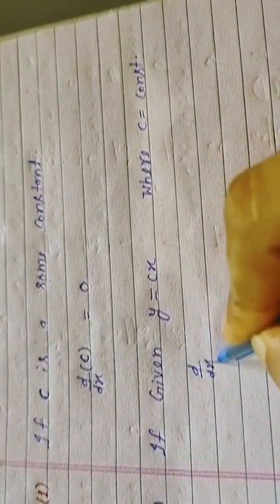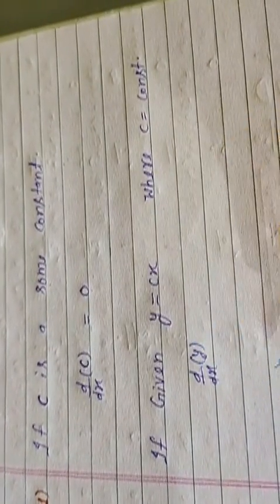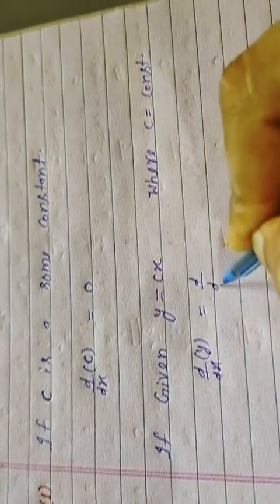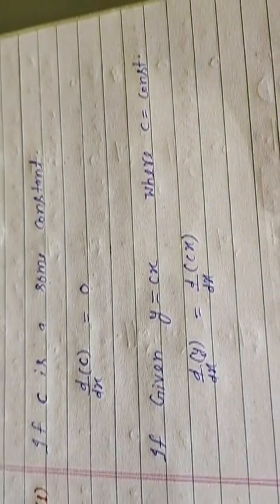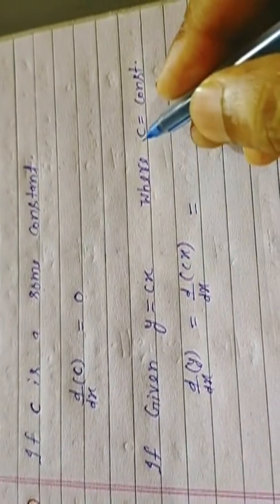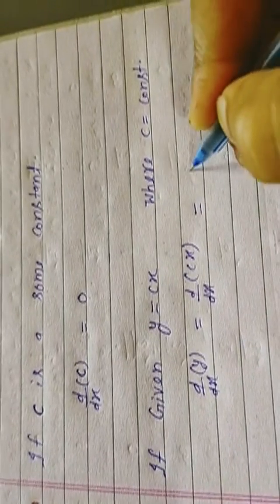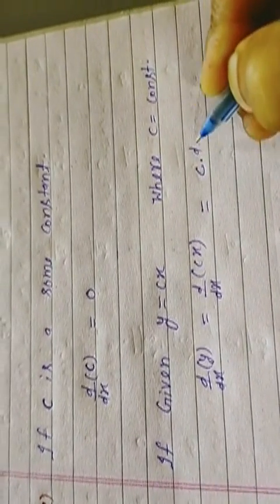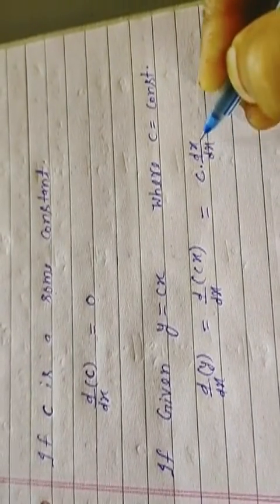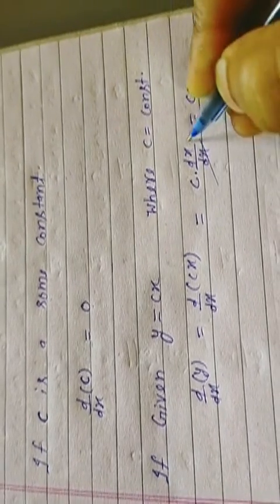Next formula, second: if given y equals Cx, where C is a constant. Now we differentiate: d upon dx of Cx. Since C is constant, we take it outside. And dx upon dx cancels out, so finally what remains is C.